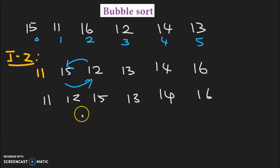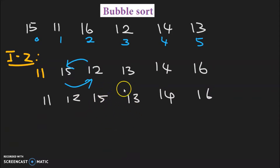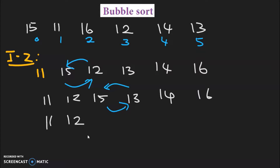In the next comparison, 15 and 13 will compare. So again, there should be an interchange. After interchanging the elements: 11, 12, 13, 15, 14 and 16 will get exchanged.